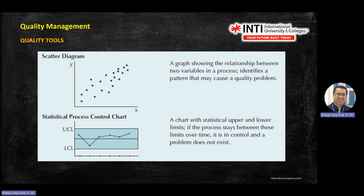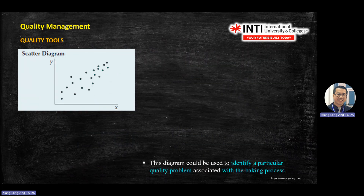For a statistical process control chart, we consider three important lines: the mean data line, the upper control line (UCL), and the lower control line (LCL) — there is a plus and minus delta. As long as your data is within the UCL and LCL, you are in control. If your data goes outside the two lines, the process is moving out of control.